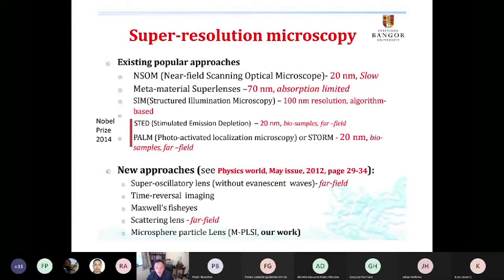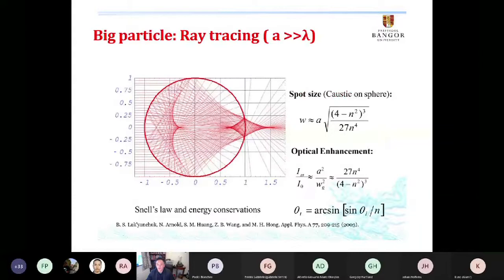I think we heard a nice summary about super resolution microscopy already. What we want to see is some new approaches that are label-free. One is the super oscillating lens developed by the nuclear group in Southampton, and there's others like hyperlens, Maxwell fisheye, and also the microsphere particulars I'm talking about.